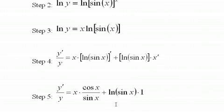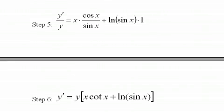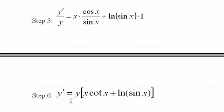Then probably the next step would be to simplify this to the cotangent and then bring the y up front. In other words, multiply both sides of the equation by y. That's what I've done here. So I now have y prime equals y times x cotangent x plus the log of the sine of x.